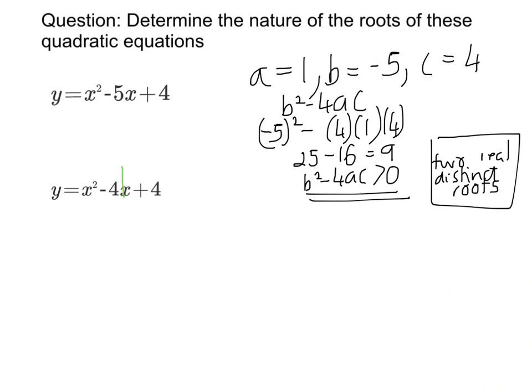This one, a is still 1, b is minus 4, c is 4. I'm going to work out b squared minus 4ac. I've got minus 4 squared minus 4 times a, which is 1, and c, which is 4. That's going to give me 16 minus 16, which is obviously equal to 0.